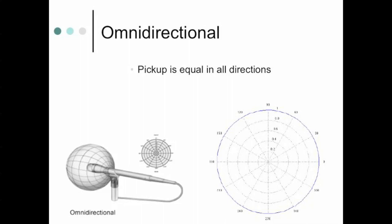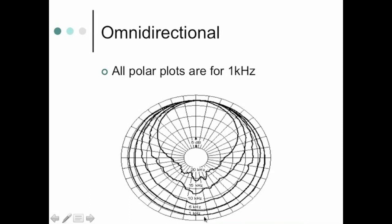In unidirectional there are subcategories: cardioid, super cardioid, and hyper cardioid. Here's an omni-directional pickup pattern — the three-dimensional drawing helps you appreciate how it picks up. In the technical literature that comes with a microphone, polar patterns are represented showing the directions it picks up, usually for one kilohertz. As you go down in frequency from 20,000 Hz to 15,000, 10,000, 5,000, 1,000 Hz, it becomes less directional.